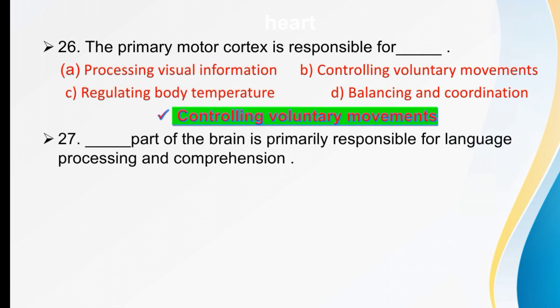Which part of the brain is primarily responsible for language processing and comprehension? This is very important. The right option is Broca's area — it is the part of the brain primarily responsible for language processing and comprehension.